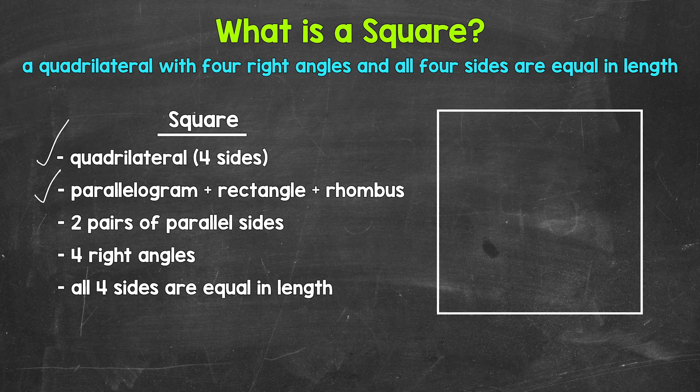Now what do I mean by that? Let's start with parallelogram. A square is a parallelogram. Parallelograms have two pairs of parallel sides. Opposite sides are parallel and equal in length, and opposite angles are equal in measure.